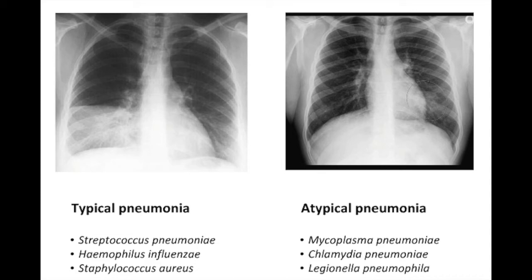The bugs that cause atypical pneumonia on Step One are going to be Mycoplasma pneumoniae, Chlamydia pneumoniae, and Legionella pneumophila. Key features to remember: Mycoplasma does not have a cell wall and contains sterols in its membrane; Chlamydia is an intracellular parasite that lives in our cells; and Legionella has bizarre culture requirements. These are very important things to know about pneumonia infections.